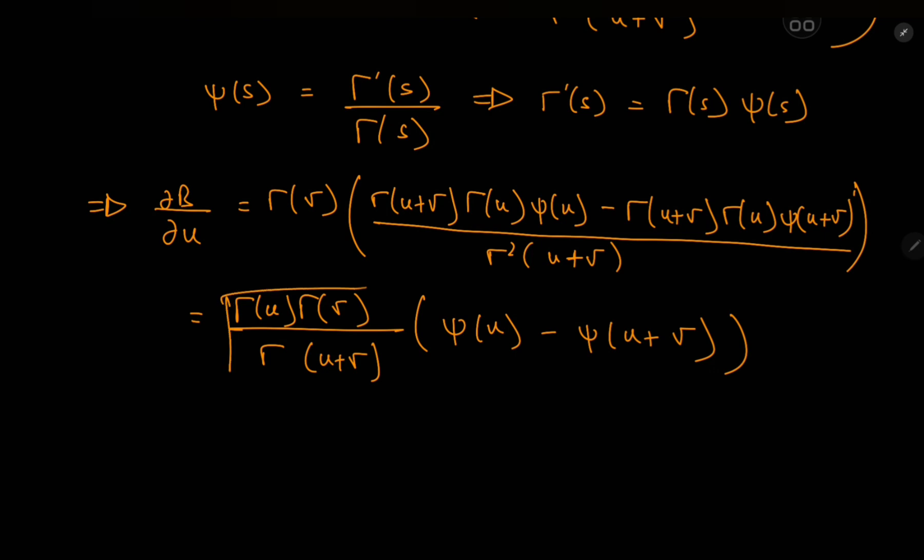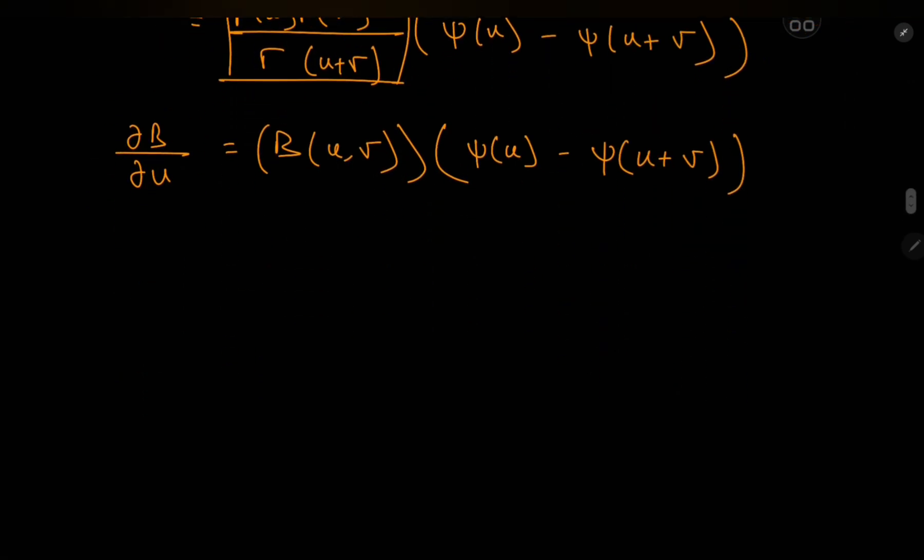And this here is the exact same structure for the beta function. So we have this nice relation that partial beta by partial u equals the beta function, repeated here, times digamma u minus digamma u plus v. And all that's left is to plug in the required values of u and v, and that is one quarter.